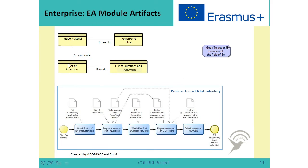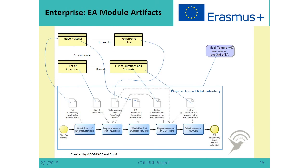So we have shown data, we have shown a simple process, and we have shown also the purpose of this introductory part of the Enterprise Architecture module. What is important in Enterprise Architecture is that the elements of these different diagrams are related to each other. We can see that the list of questions and answers refers to two elements, and those elements are used across diagrams. The purpose of the process is shown as well. This is a simple way to represent Enterprise Architecture for our small enterprise.